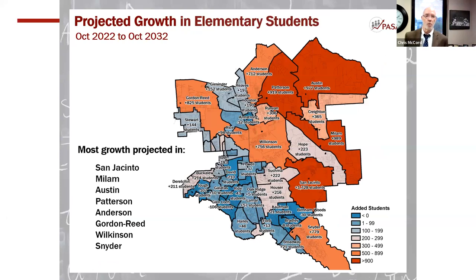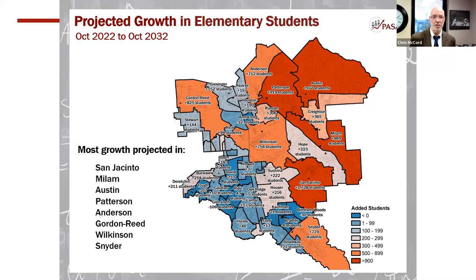Here's another way of looking at it. When you have campuses already at capacity, Anderson will be adding over 700 students, Patterson a little under 1,000, Austin right at 1,000 more students until 2032, Milam just under 1,000. Creighton considerably fewer at 365, but remember Creighton is already at 152% of capacity. San Jacinto stands out, Wilkinson stands out at nearly 756 new students. So these are all things that we're working through.